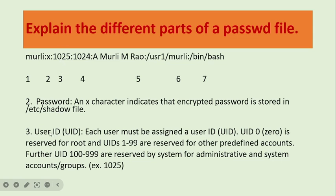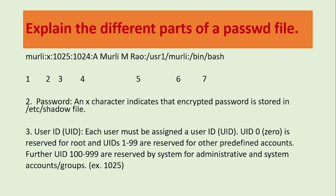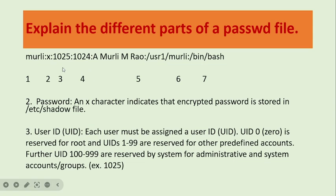Next is number 3: User ID, or user identification. Each user must be assigned a user ID. If the value is 0, it means it is the root — UID 0 is reserved for root. UIDs 1 through 99 are reserved for predefined accounts. Further, UIDs 100 through 999 are for system administration. The user ID given in our example is 1025.